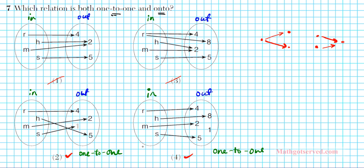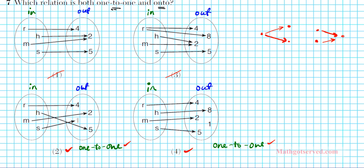The question says which is 1-to-1 and onto. Onto basically means that for every element you have in the output, you have exactly one input pointing to that element. Looking at option 2's output elements — 4, 2, 1, 5 — each has exactly one input pointing to it: 4 has R, 2 has M, 1 has S, 5 has H. Every image has a pre-image. You do not have any output elements in isolation without an arrow pointing to it. So this relation is onto — it is 1-to-1 and onto. This is our correct answer.